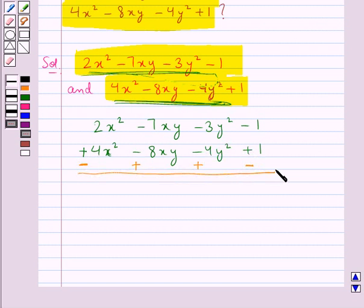2x² - 4x² would give us -2x², then -7xy + 8xy would give us +xy, then -3y² + 4y² would give us +y², and -1 - 1 would give us -2.